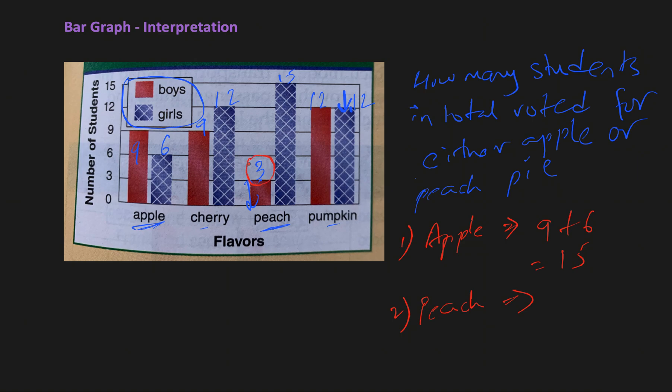For peach pie, we look at the graph again and we can see that three boys said they like peach pie and 15 girls said that they like peach pie, so this would be 3 plus 15, and that's 18. In total, we have 15 plus 18, which is 33 students who voted for either apple or peach pie.